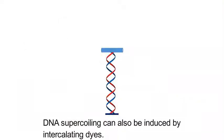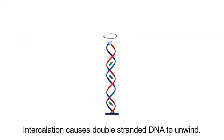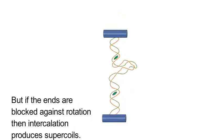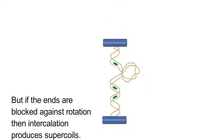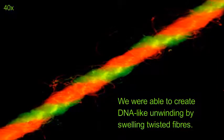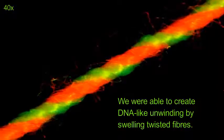DNA supercoiling can also be induced by intercalating dyes. Intercalation causes double-stranded DNA to unwind. But if the ends are blocked against rotation, then intercalation produces supercoil. We were able to create DNA-like unwinding by swelling twisted fibres.